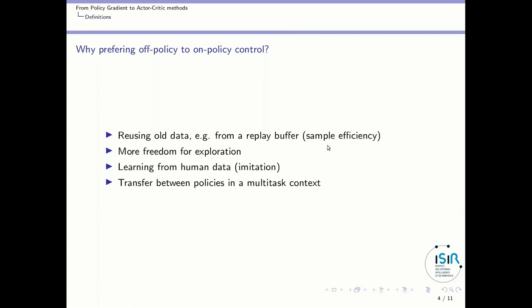Another point is that if you are off-policy, then you have more freedom for exploration. You can use different policies to explore from the one that you want to learn. In particular, what is very useful in robotics is that you can learn from human data — that's called imitation learning or learning from demonstration. You can let a human play with your system, store the state-action pairs in a replay buffer, and then train your policy using that data, which can be much more efficient than discovering everything from scratch.